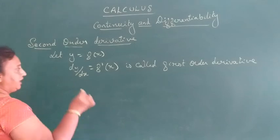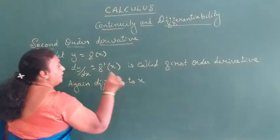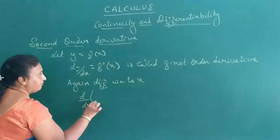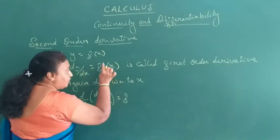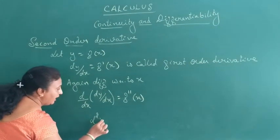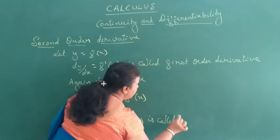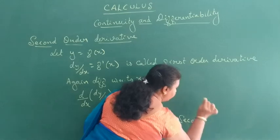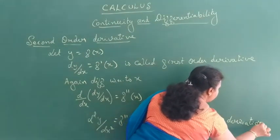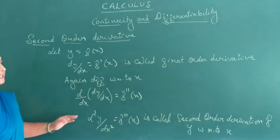Again differentiate with respect to x. Then d/dx of dy/dx equals f″(x). And it is denoted by d²y/dx² equals f″(x), which is called the second order derivative of y with respect to x.